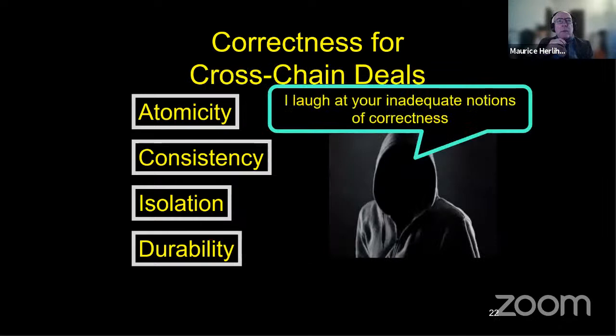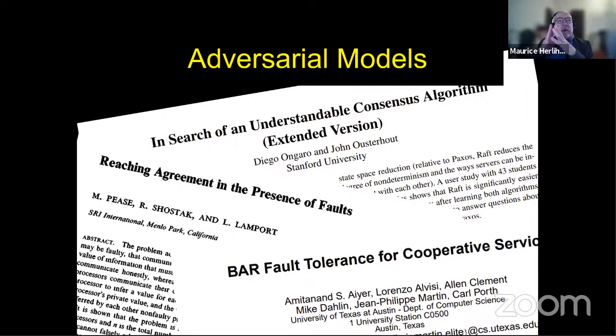And so naively taking the classical properties as your correctness condition will not deter or frustrate our adversaries. So there's been a lot of work on adversarial models, fault models. We started out with crashes, then moved on to Byzantine. There are a lot of elaborate notions. Paxos and Raft, the two most popular state machine replication practical algorithms, assume that the majority doesn't crash.